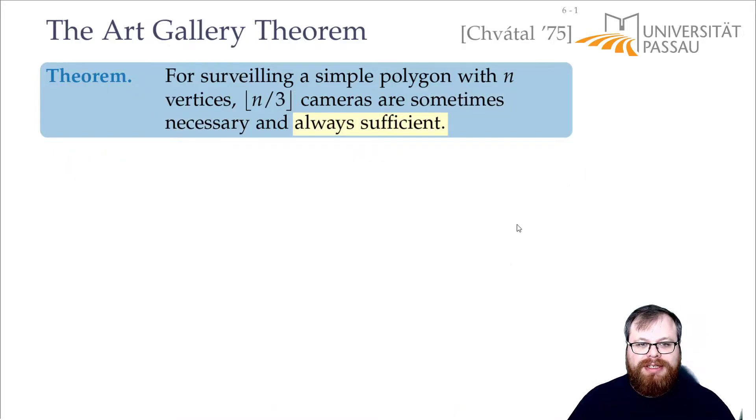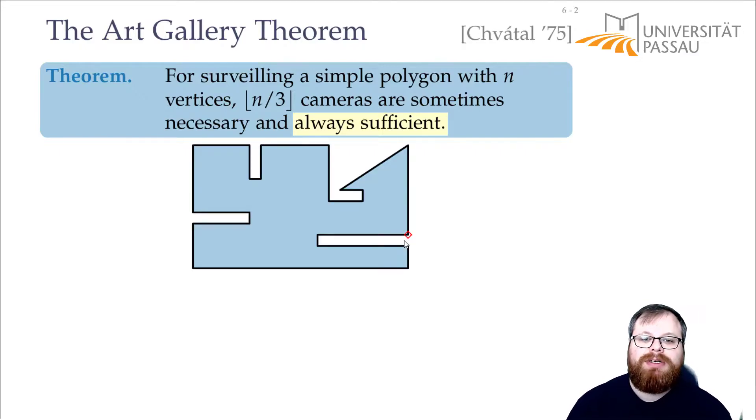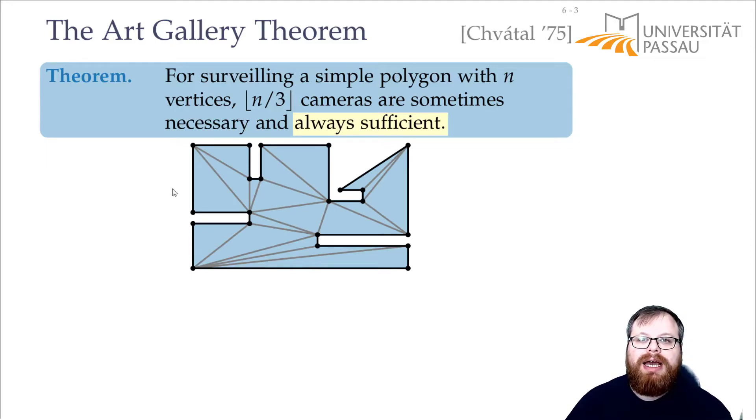Let's move on to the sufficient part. So we want to show that you can cover them all with n over three cameras. Basically, we want to give an algorithm that always uses at most n over three cameras to cover a simple polygon. And of course, we want to use what we've just found out, that we can triangulate any simple polygon into n minus two triangles. Now, how do we go from this triangulation with n minus two triangles to a cover with at most n over three cameras?